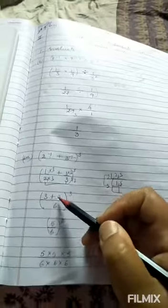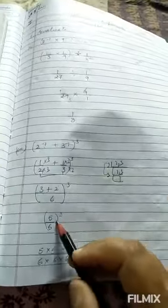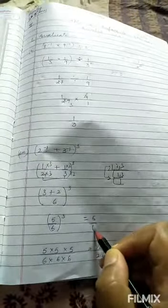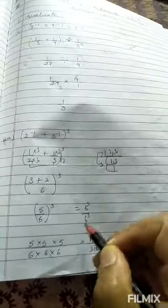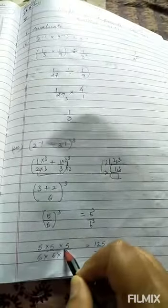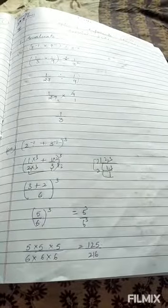Now 3 plus 2 is 5 upon 6 to the power 3. Now open the bracket and this power will be on both numbers, 5 also, 6 also. So 5 into 5 into 5, into 6 into 6 into 6, will give you 125 upon 216. Is it clear to you children?